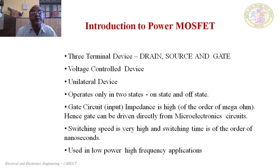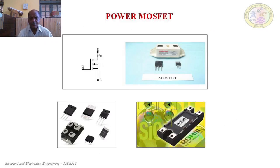In this device, an electrostatic field is created, but there will not be any leakage or input current. It is a purely voltage control device — the output current can be controlled by varying the input voltage. In this slide, you can observe the power MOSFETs; different models are available depending upon the size, shape, type, current handling capacity, power handling capacity, operating voltage, and type of mounting used. Depending upon these factors, MOSFETs are designed.